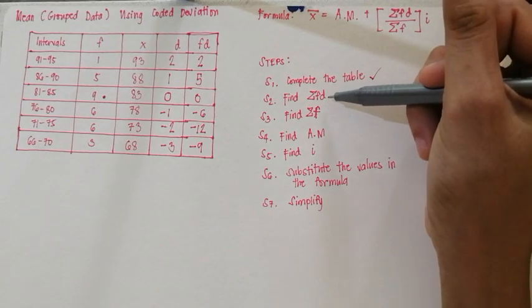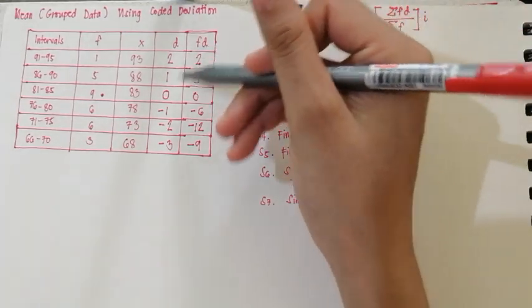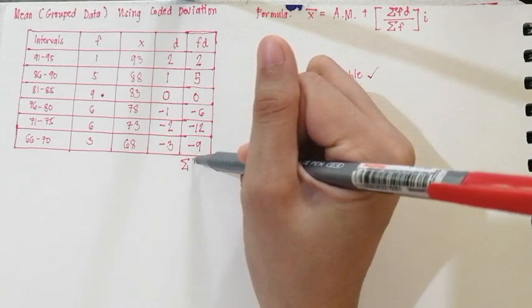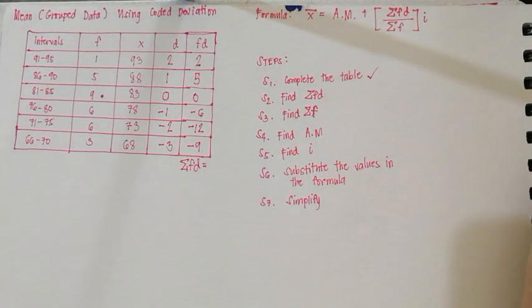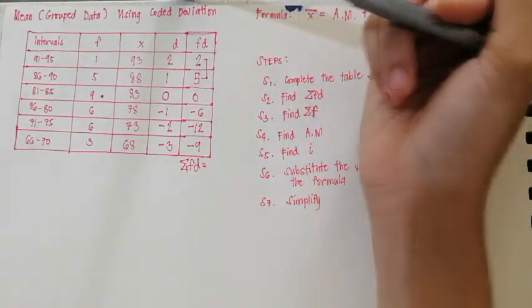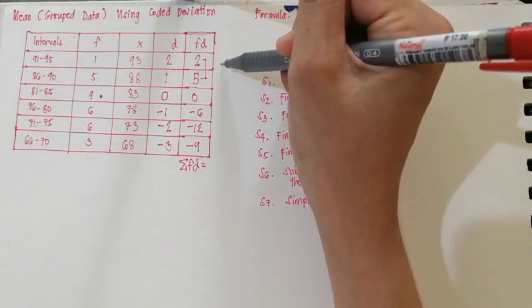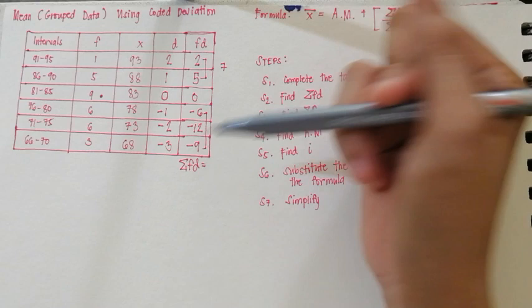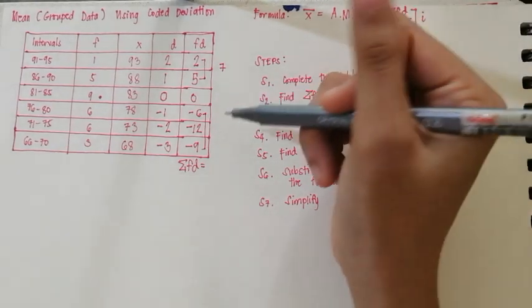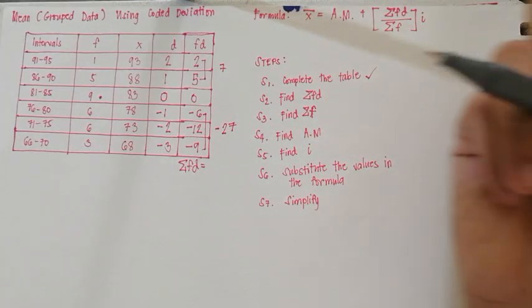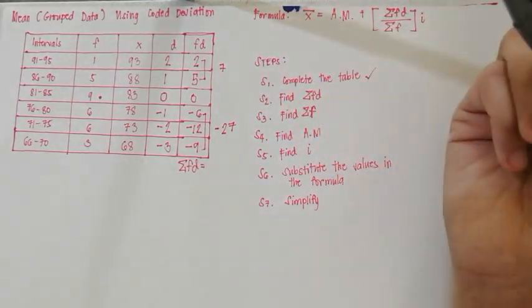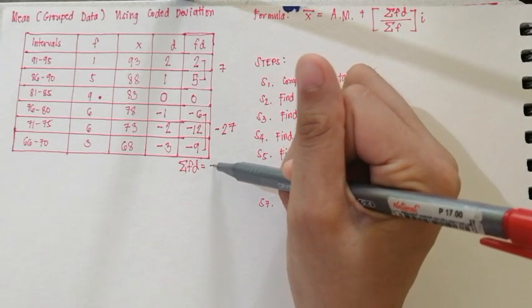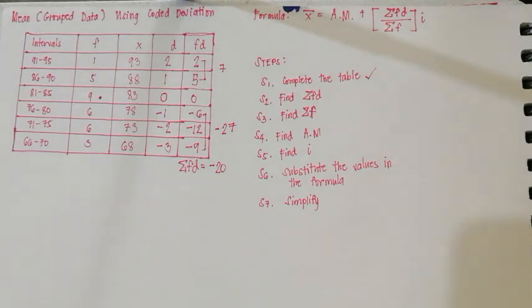Step 2: find summation of FD — add all the FD values. Adding the positive numbers first: 2 plus 5 is 7. Adding the negative numbers: negative 6 plus negative 12 plus negative 9 is negative 27. Then 7 plus negative 27 gives you negative 20. That's your summation of FD. Step 2 is done.